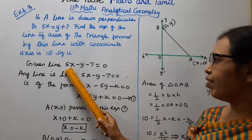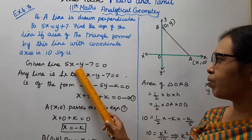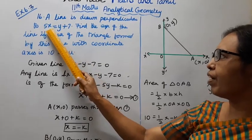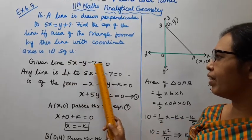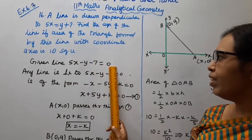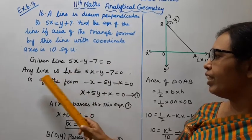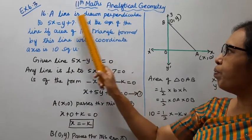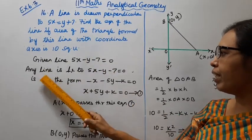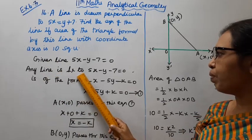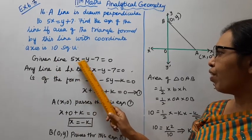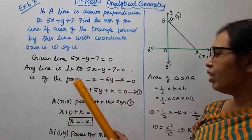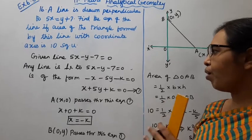Given: Line 1 is 5x - y - 7 = 0. Any line drawn perpendicular to 5x - y - 7 = 0 is of the form x + 5y + k = 0.